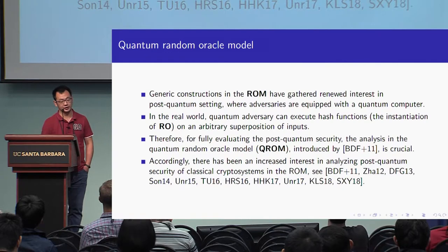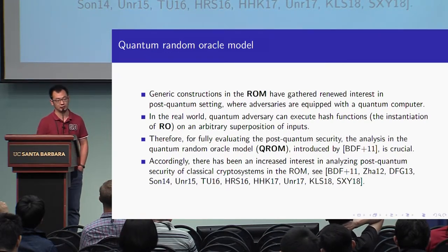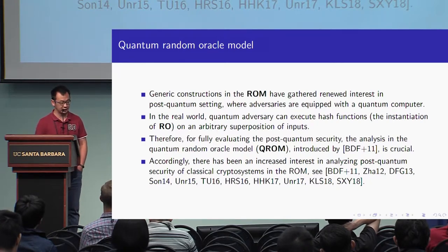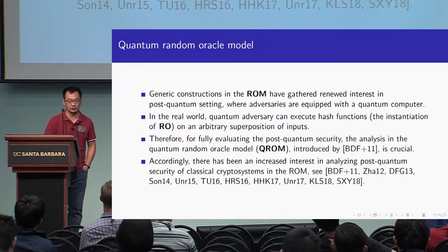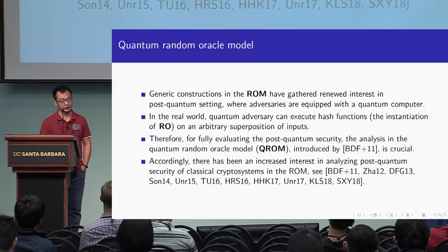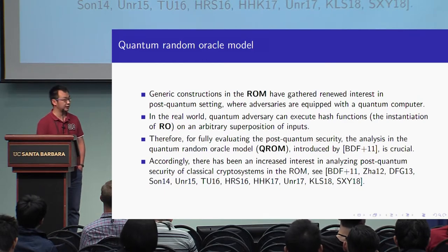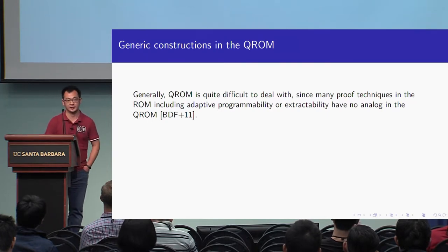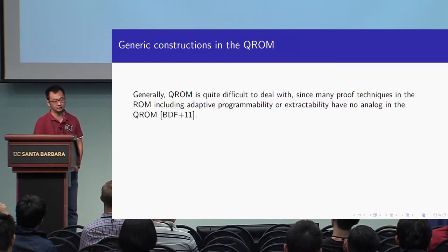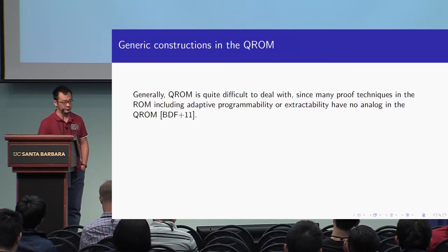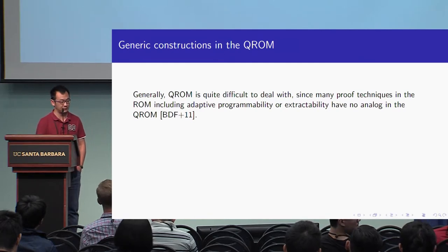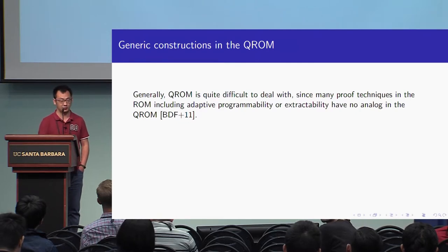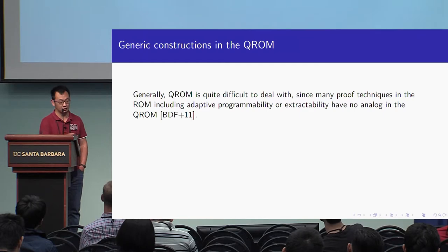Although we are now in the quantum setting, the adversary can access the quantum random oracle. That means they can compute hash functions with inputs given as superpositions. So in the real world, we should consider the quantum random oracle model (QROM). The QROM was originally introduced by Boneh et al. at Asiacrypt 2011, and there are many following works. In the QROM, different proof techniques are needed compared to the classical random oracle model.